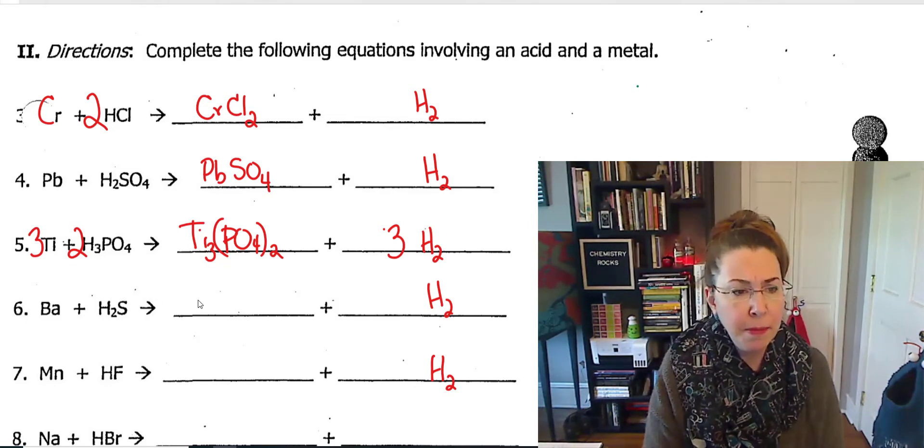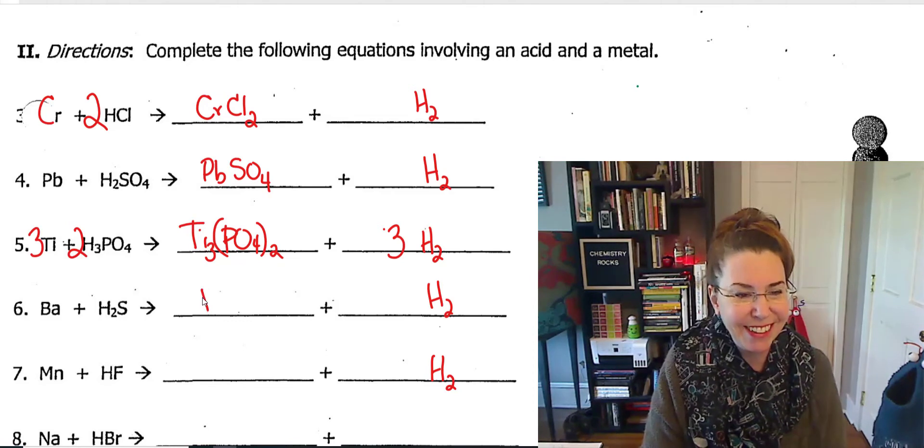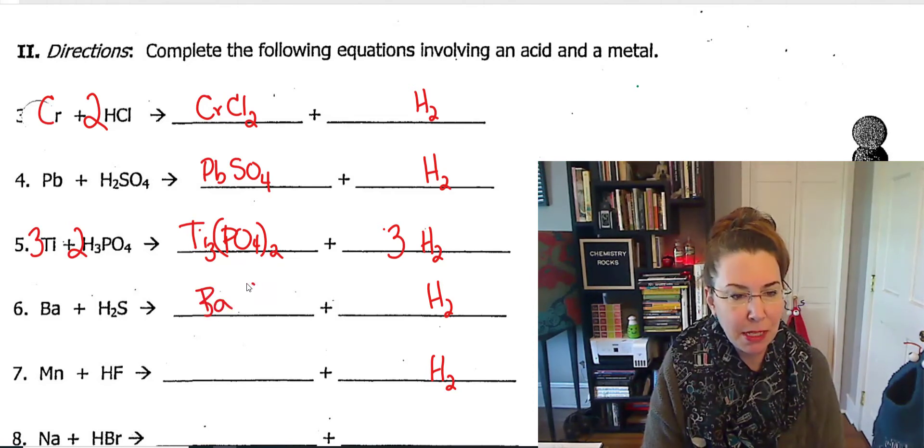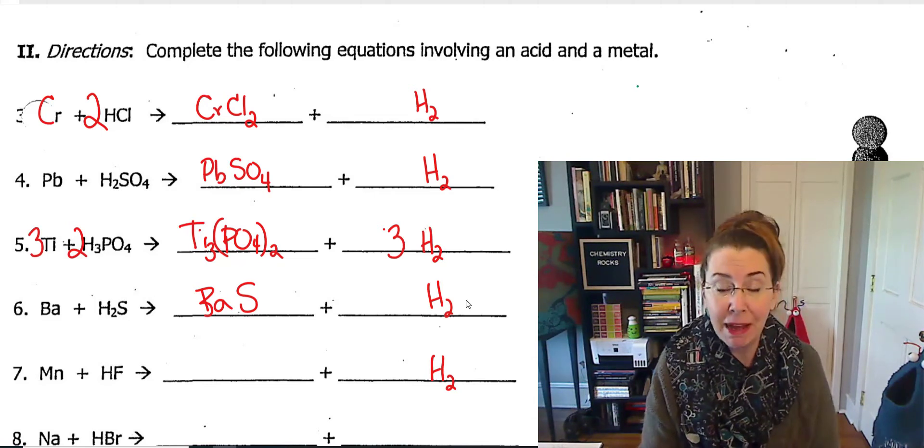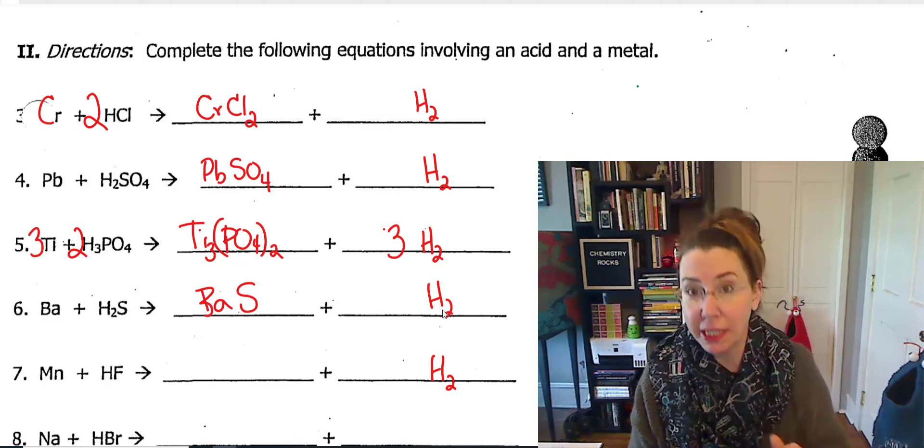Our next one is much easier. Barium has a charge of plus 2, sulfur has a charge of minus 2. We've got 2 hydrogens. It's all balanced, done, super easy.